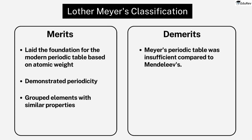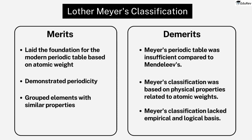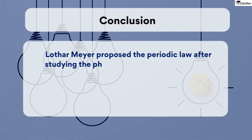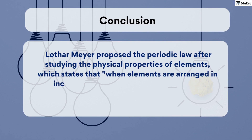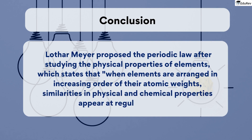Meyer's periodic table was insufficient in comparison to Mendeleev's periodic table, which was published the same year and made remarkable predictions about the discovery of certain elements. Meyer's classification was supported by a study of various physical properties related to atomic weights, with no empirical or logical basis for classification, and such values are difficult to remember. To conclude, Lothar Meyer proposed the periodic law after studying physical properties, stating that when elements are arranged in increasing order of their atomic weights, similarities in physical and chemical properties appear at regular intervals.